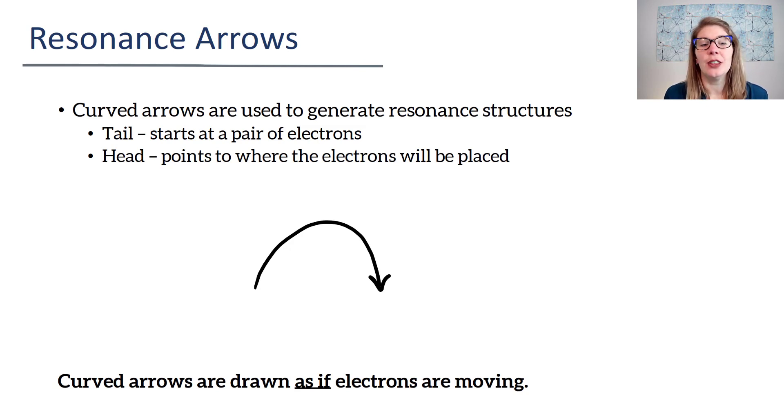we're going to look at the resonance arrows and talk about what they mean. What you're going to find for resonance structures is you're going to practice it, you're going to think you understand it, and then the next day you will not understand it anymore. And that is completely normal. I remember feeling the same way as a student. I thought I understood resonance and I would start drawing these arrows and think, wait, what do the arrows mean again? So it really is going to take a lot of practice.